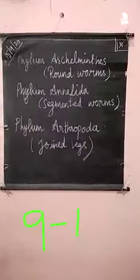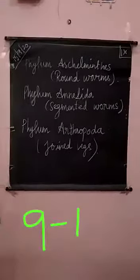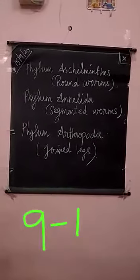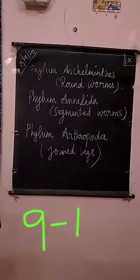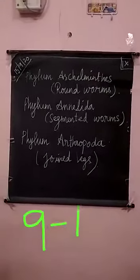To summarize roundworms: they are bilaterally symmetrical, triploblastic, and have a pseudocoelom — meaning a false body cavity. They exist as parasites, are unsegmented, and their body is covered by a thin cuticle.